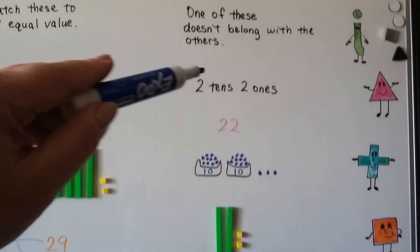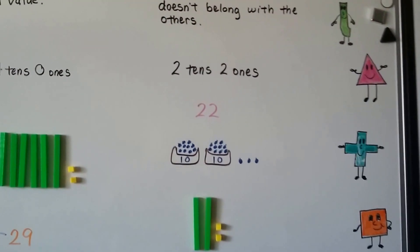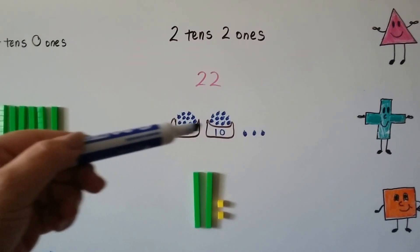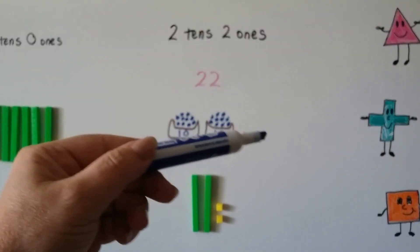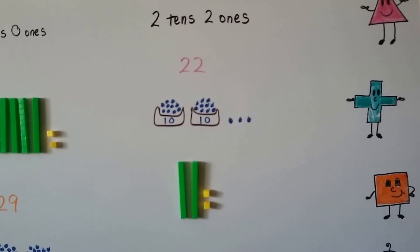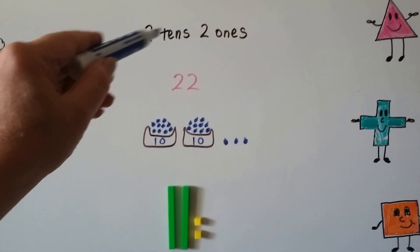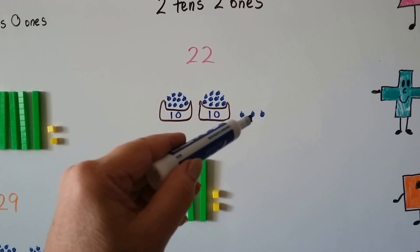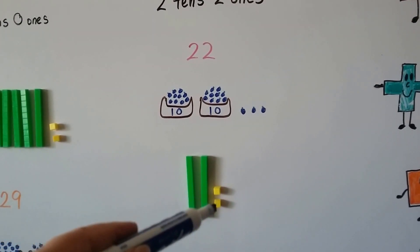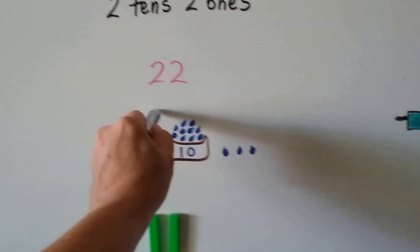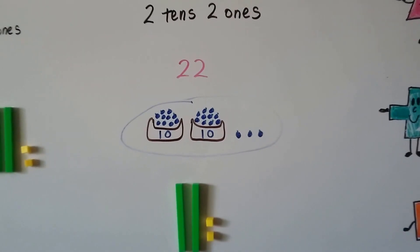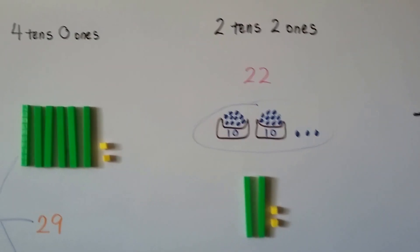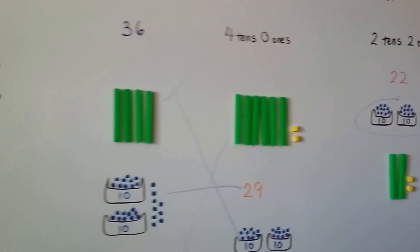Now take a look at these — one of these doesn't belong with the others. Is it the two tens and two ones, the twenty-two? Or these two bowls of ten berries with three little berries on the side? Or is it the two longs with the two units? Well, this one is two tens and two ones — that's twenty-two. This is two tens and three ones. This is two longs of ten and two ones. If you said this one doesn't belong, you're right — because it's got three ones in it. The other ones are all twenty-two.